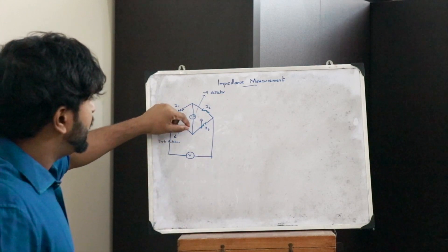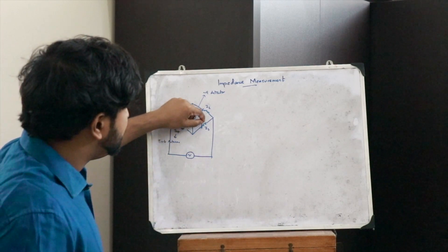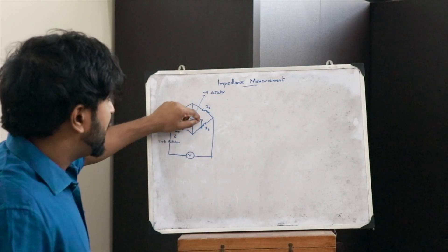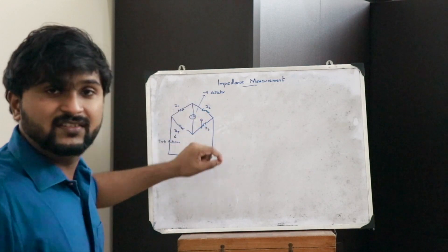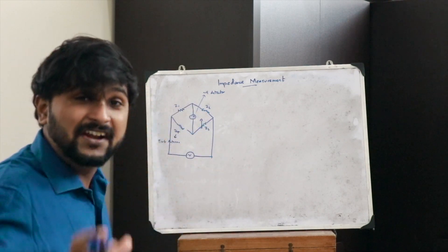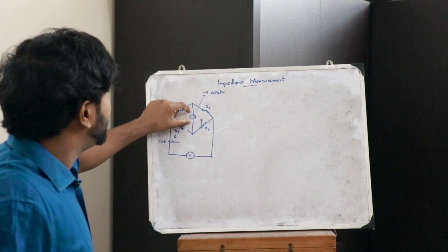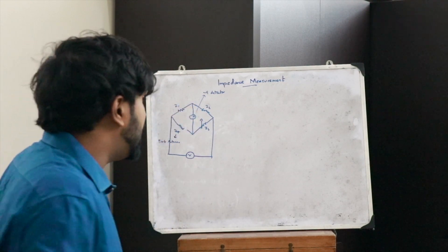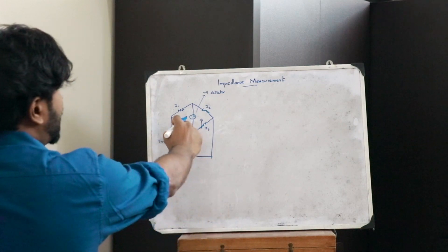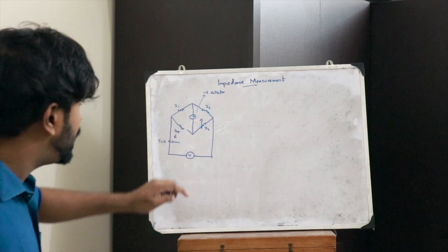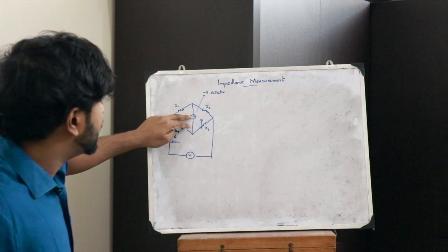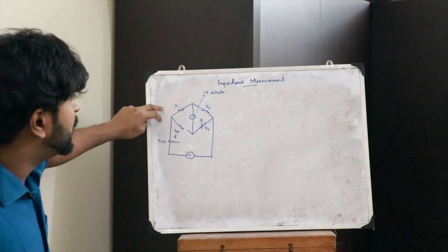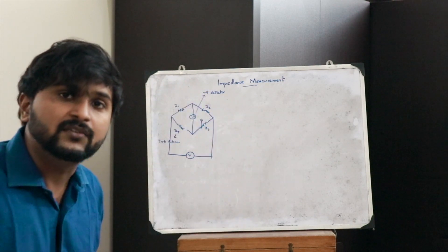What we do is change the value of Z3 until we get a null deflection in this particular null detector. Once a null deflection is obtained in the null detector, this particular bridge is said to be balanced.